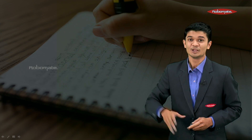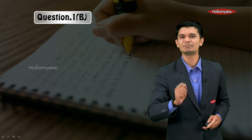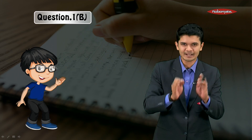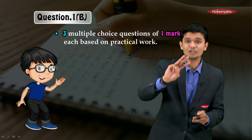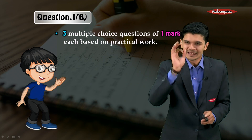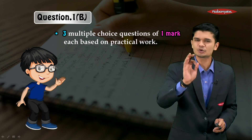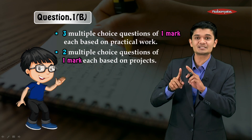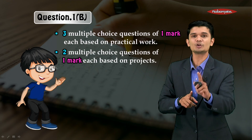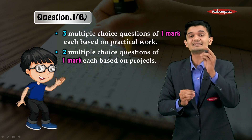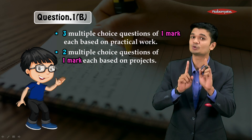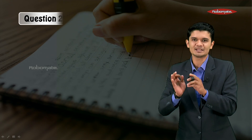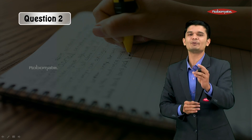Now let's go for Question Number 1B. This question is made up of five sub-questions, each of one mark. Keep in mind, out of these five questions, three of them are multiple choice questions for one mark each, based on practical work — make sure to go through your practical journal very carefully. The other two multiple choice questions will be based on projects or experiments inside your textbook. Go through those very carefully as well. This section is for a total of five marks.